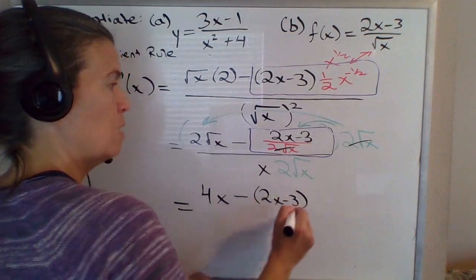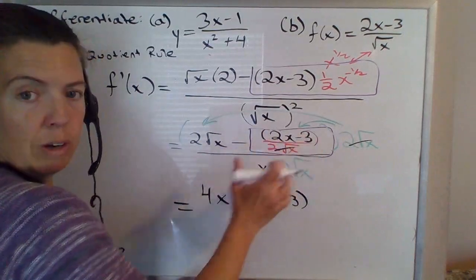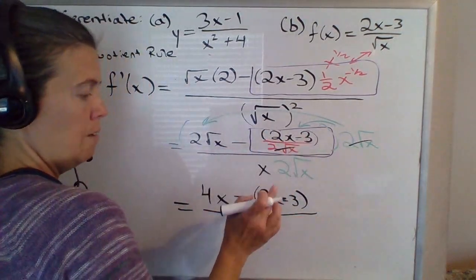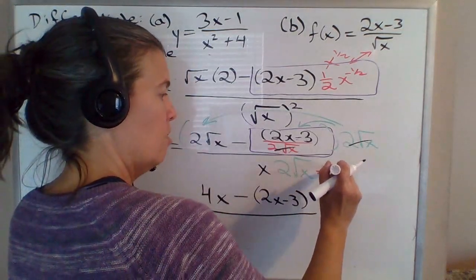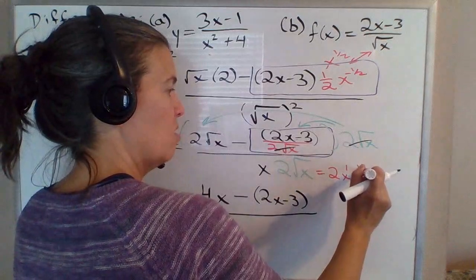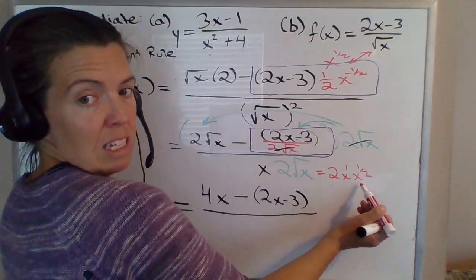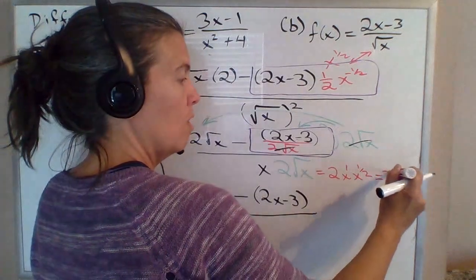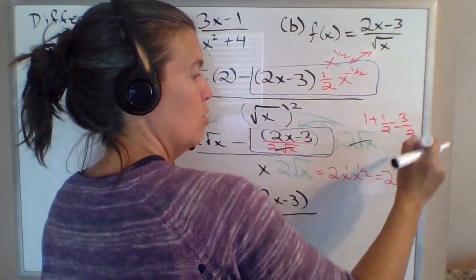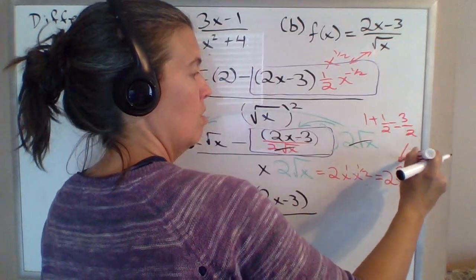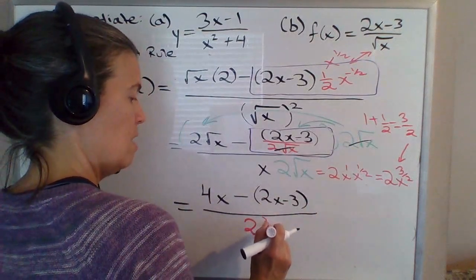So it's just minus 2x minus 3 — minus that whole thing though, since there's an implied parentheses around a numerator when you write a fraction. Now 2x times 2 times square root of x — that's 2 times x to the first times x to the 1 half. When you multiply terms with the same base, you add those exponents: 1 plus 1 half is 2 over 2 plus 1 over 2, which gives you 3 over 2. So this is x to the 3 halves, making the denominator 2x to the 3 halves.